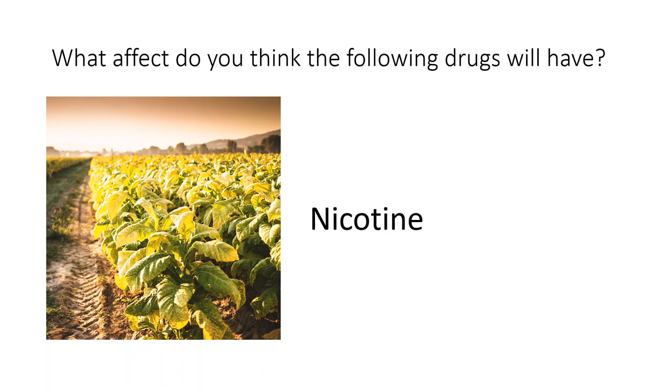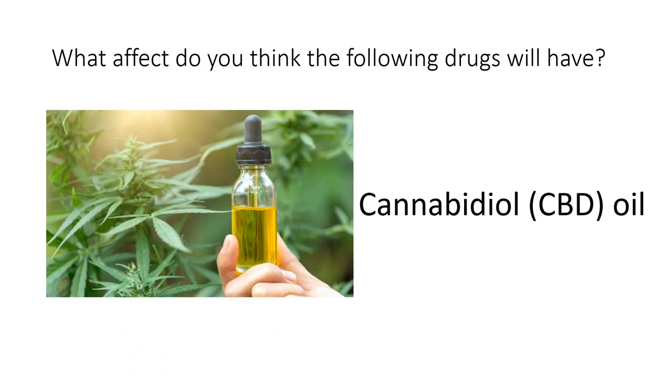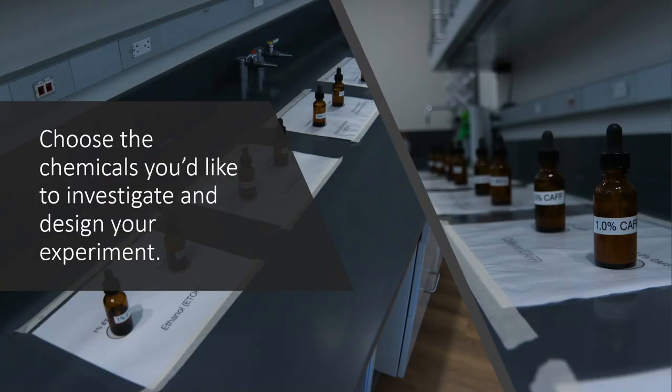So we have four drugs we can test today. We have nicotine, ethanol, caffeine, and CBD oil. One of these should cause the heart rate to increase, one should cause it to decrease, and two should have no effect. It's kind of up to you to decide what you think is going to happen for each one of them. So first you should choose the chemicals you want to investigate and design your experiment. So this means making your hypothesis that is a causal explanation. Remember it should not be an if-then statement. It should be for example, CBD oil causes the heart rate of daphnia to increase or decrease because of this. So it's a prediction of what is going to happen. This will cause this, not if we do this, then this.